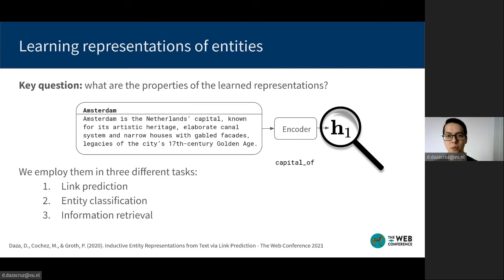A key question in our work is what are the generalization properties of entity representations learned via link prediction objective? Are they useful for more than just link prediction?